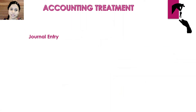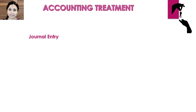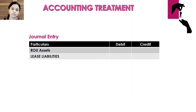Now let's go to the accounting treatment. What is the journal entry that will be passed? This is a recalculation of the lease liability, so one of the accounts that gets impacted is the lease liability. The corresponding adjustment gets made in the ROU asset account. The entry is: ROU asset debit to lease liabilities if the lease liability increased. If the lease liability decreases, it is lease liabilities debit to ROU assets.